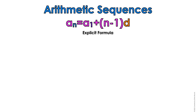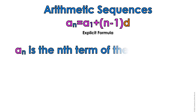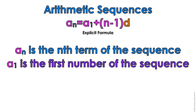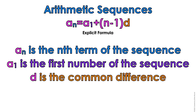So here is the explicit formula of an arithmetic sequence — this is the basic formula. a sub n is the nth term of the sequence, a sub 1 is the first number of the sequence, and d is the common difference.